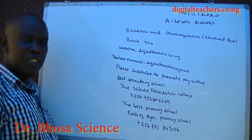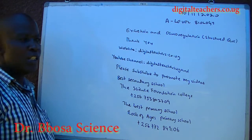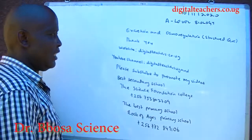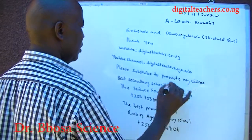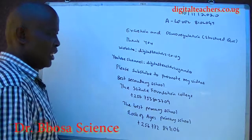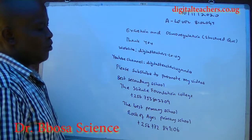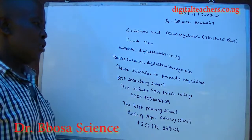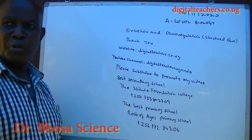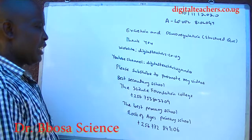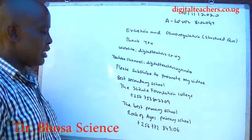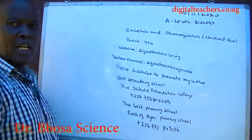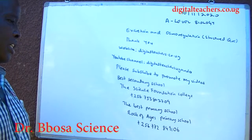Please visit our website digitalteachers.co.ug for notes, exams and marking guides. Also visit our YouTube channel digitalteachers.ug for related videos. Please subscribe — subscription is free. The best secondary school is Science Foundation College, plus 256-753-827-09. The best primary school is Rock of Ages Primary School.